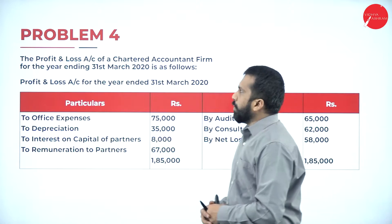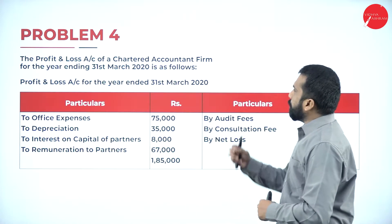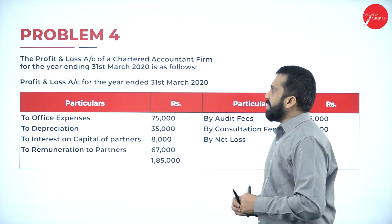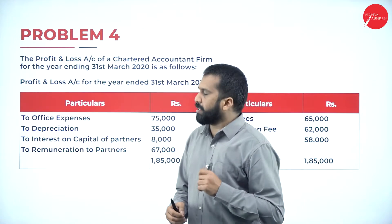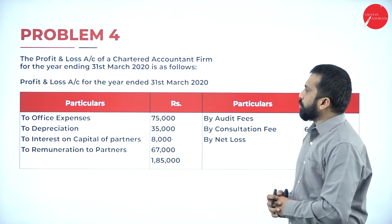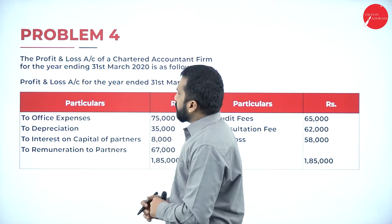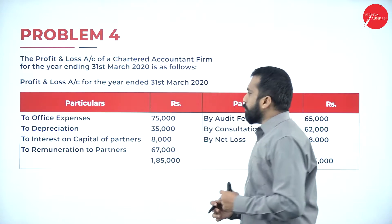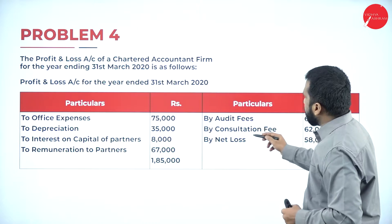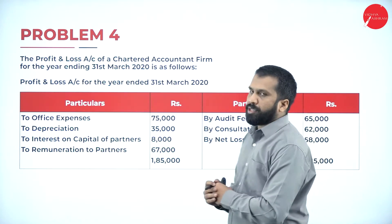Problem number 4: the profit and loss account of a chartered accountant firm for the year ending 31st March 2020. In this profit and loss account, the particulars include office expenses, depreciation, interest on capital of partners, remuneration of partners, audit fees, consultation, and net loss. These are the informations you have.